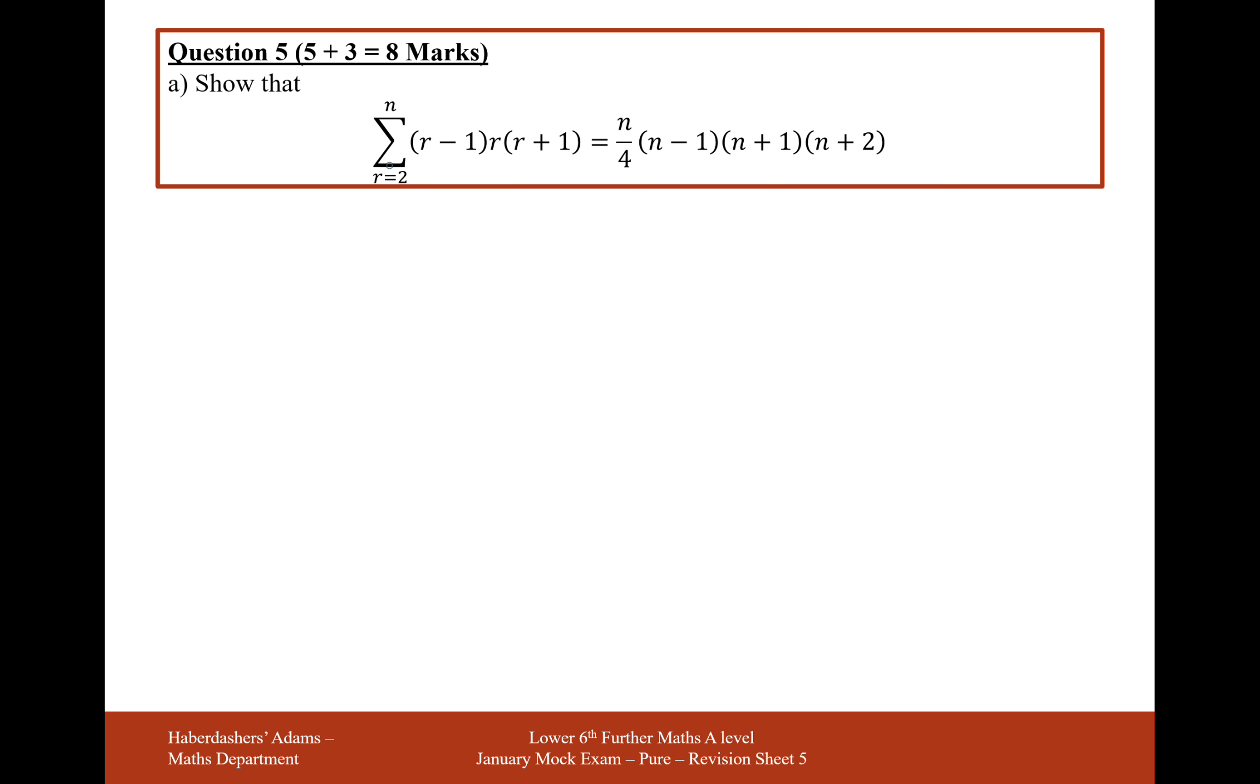That's a bit funny that we start at 2 because we usually start down at 1. Let's have a look at what would have happened if we were to start down at 1 and look at the first term. So the first term would have been 1 minus 1 times 1 times 1 plus 1. So this is effectively going to equal 0 times 1 times 2 which is just 0.